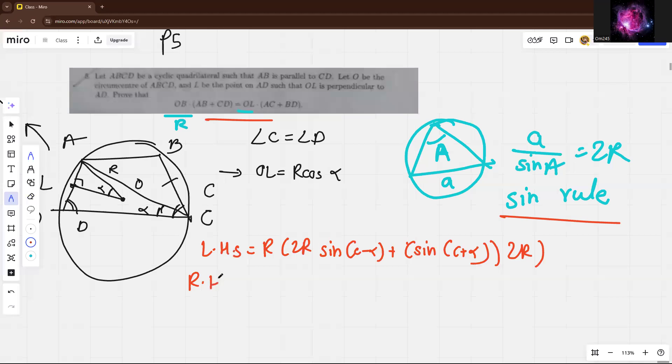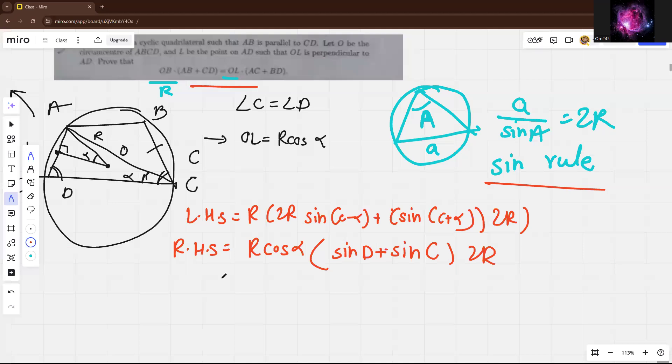And what we have as RHS is actually OL. OL is r times cos alpha. And DE is equal to actually sine D, like sine C actually, but we will denote by the same, sine C times 2r again. So if you cancel out r and 2r from both sides, we just end up with the simplified form.